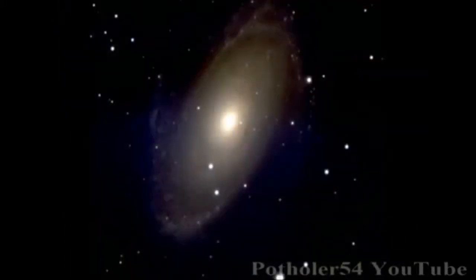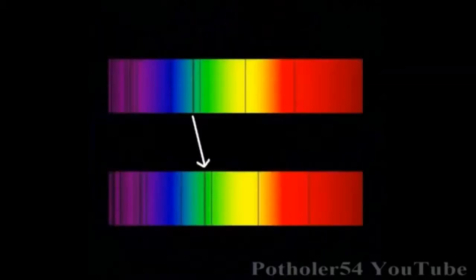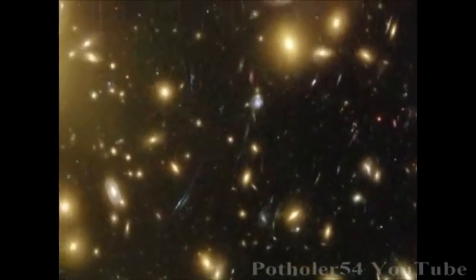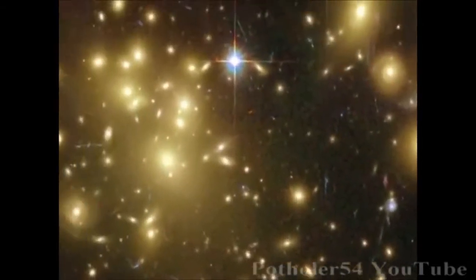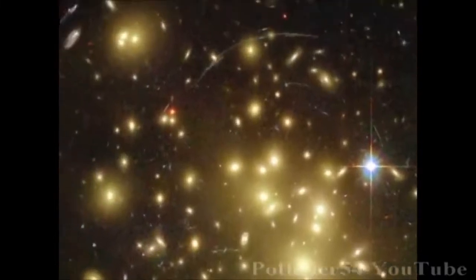We can do the same with stars and galaxies, using light instead of sound. If a galaxy is moving away, the spectral lines will shift towards the red end of the spectrum. The opposite happens if a galaxy is coming closer, they move towards the blue end. So cosmologists could not only calculate which direction the galaxies are moving, but also their speed.